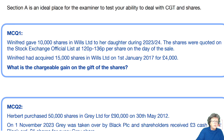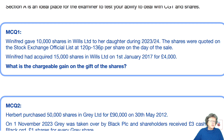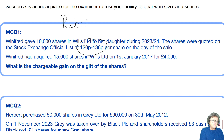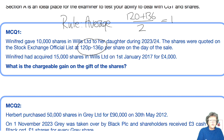So this first multiple choice question: Winifred gave 10,000 shares in Wills to her daughter during 2023–24. The shares were quoted on the official stock exchange list at 120 pence to 136 pence per share on the day of the gift. She bought the shares in January 2017 for £4,000. What is the chargeable gain on the gift of the shares? You remember the rule for dealing with this — it's the average. So 120 plus 136 divided by 2 gives us 128p per share.